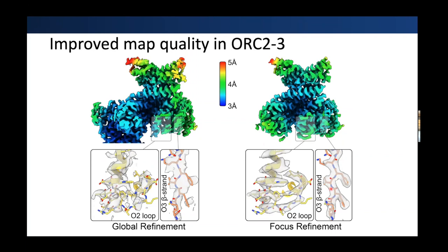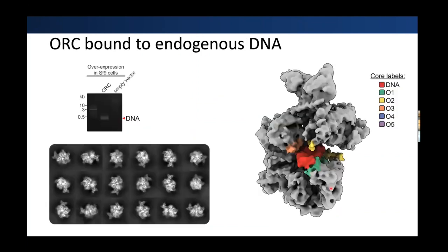The last conformation we noticed, surprisingly, was the conformation with DNA bound. We didn't supply any DNA to our sample — this DNA came endogenously from the SF9 expression. We noticed some DNA on an agarose gel after purifying the complex. When we started processing, we noticed a strong density in the core of the complex, and in the final map we saw this density in the core. Unfortunately, it seems the DNA is binding loosely and in different conformations, and it's likely different sequences since human ORC doesn't have sequence specificity.